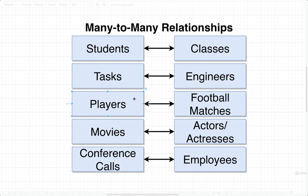Sports games is another great example. There might be many different players who play in a single football match, and there are matches that have many players playing in them. Movies is another great example — the majority of movies probably have multiple different actors or actresses starring in them, and a given actor or actress might star in many different movies. And then finally, conference calls: over the span of one week, there might be many conference calls with many different employees on them, and an employee might be in many different conference calls.